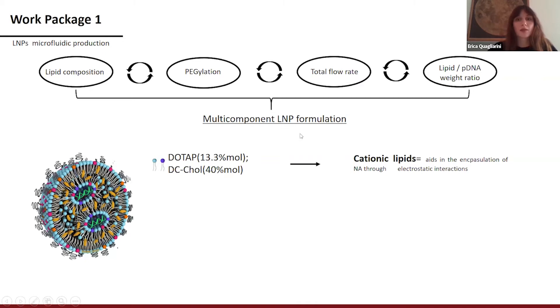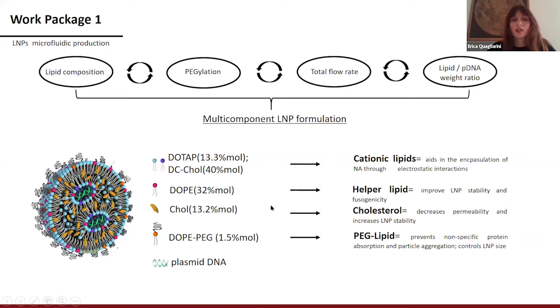So our multi-component lipid nanoparticle formulation was made of 50% of cationic lipids, in particular DOTAP and DDAB to enhance the interaction with the negatively charged nucleic acids. Then we used two helper lipids, DOPE and cholesterol. As for the DOPE lipid, we have chosen this kind of lipid for its packing capabilities, conferred by the presence of two unsaturated groups on its carbon tails. As for the cholesterol, it promotes the permeability towards the cell membrane. Finally, we chose a PEG lipid, the DSPE-PEG, to prevent the non-specific absorption of the protein and the particle aggregation.